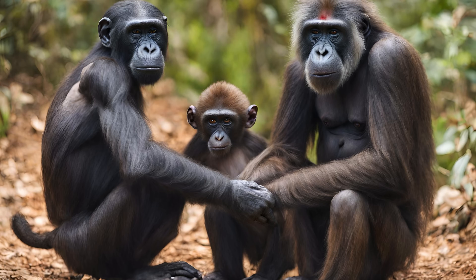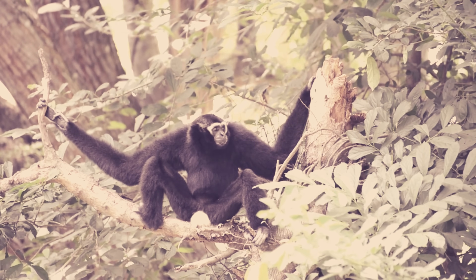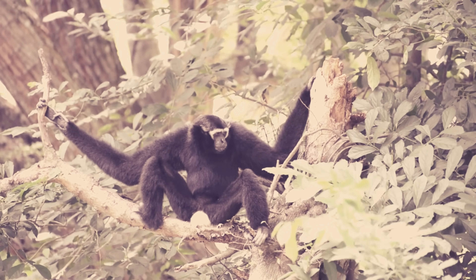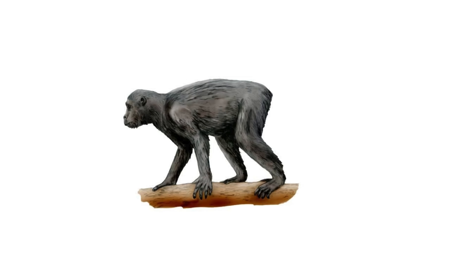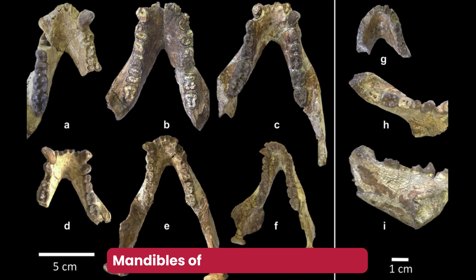The oldest known African apes lived about 23 million years ago in forests and woodlands across Africa, thriving alongside many different types of monkeys and apes. They were smaller than modern apes and walked on the soles of their feet rather than on their knuckles. These apes are often called 'dental apes' because they had Y5-type patterns in molar cusps similar to apes but with bodies more like monkeys.